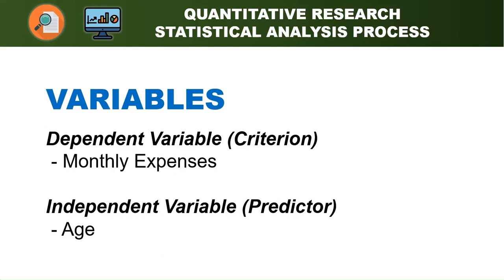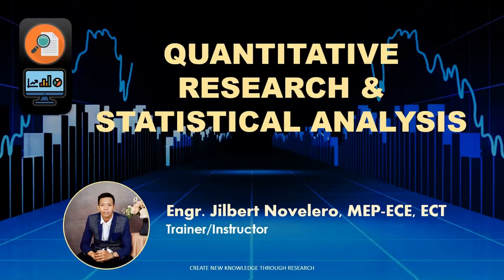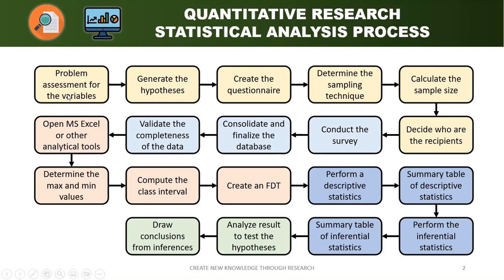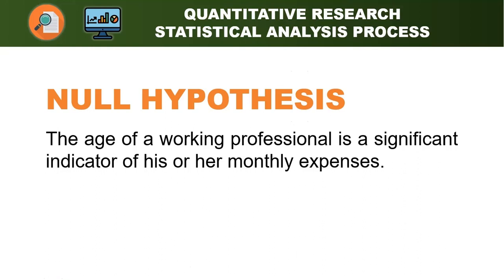From the determination of the dependent and independent variables, we can now create our null hypothesis. We are on step one — problem assessment for the variables — and the next is generating the hypothesis. The null hypothesis states: the age of a working professional is a significant indicator of his or her monthly expenses. We do not yet know if age has a direct or inverse relationship with monthly expenses — whether expenses increase or decrease as one grows older. That is the main goal of this activity.